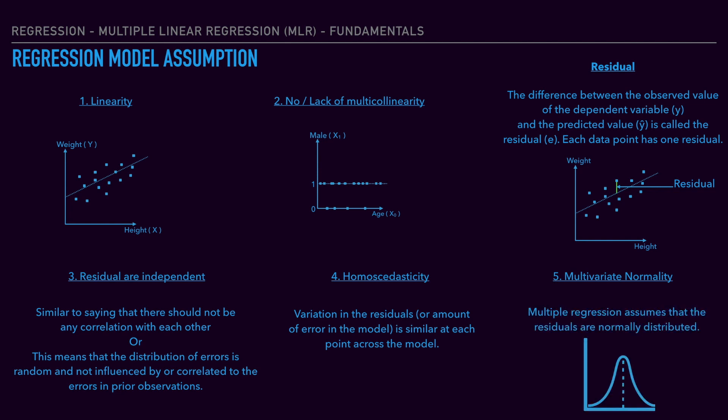The next assumption is multivariate normality. That means if we have all the entire residual data points and check the distribution, it should be normally distributed. That means we can say that the fifth assumption is passed.